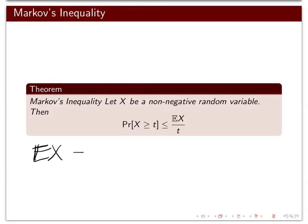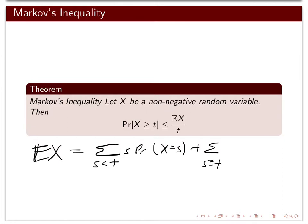The expectation of x is the sum over all values less than t of s times the probability x equals s, plus the sum over the values greater than t.